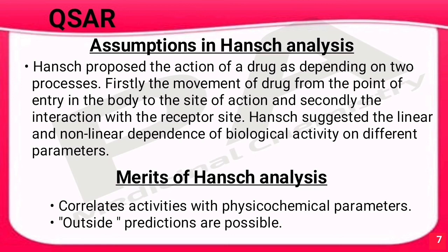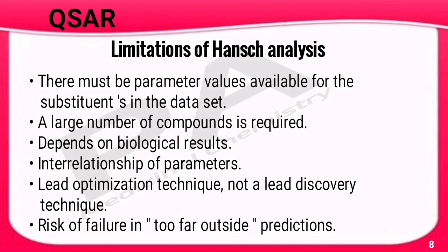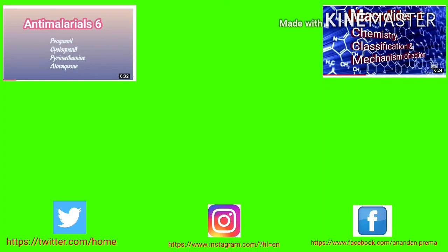The merits of Hansch analysis are that it correlates activities with physico-chemical parameters and outside predictions are possible. The limitations are: parameter values must be available for all substituents in the data set; a large number of compounds is required; it depends on biological results and relationships of parameters; and it is a lead optimization technique, not a lead discovery technique.